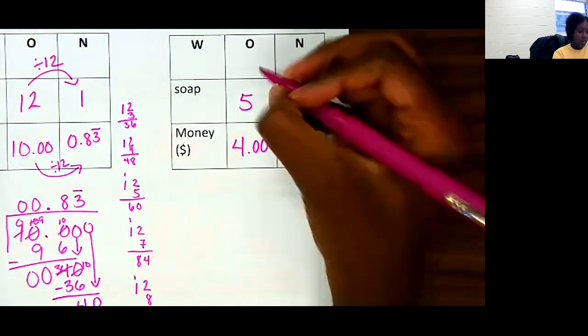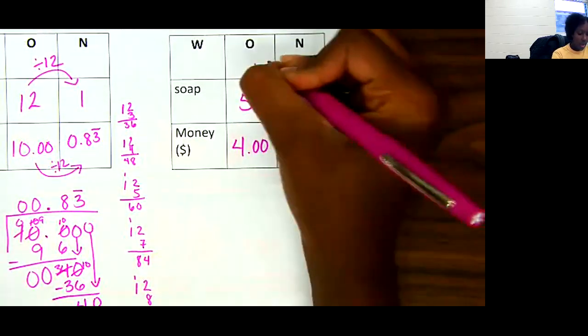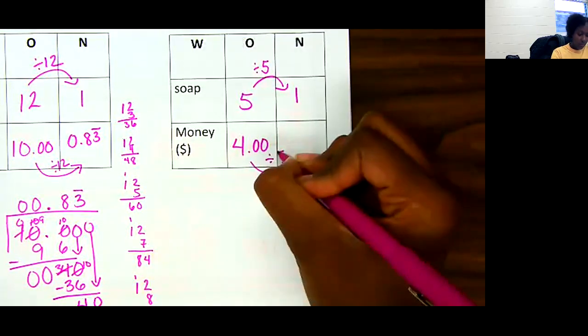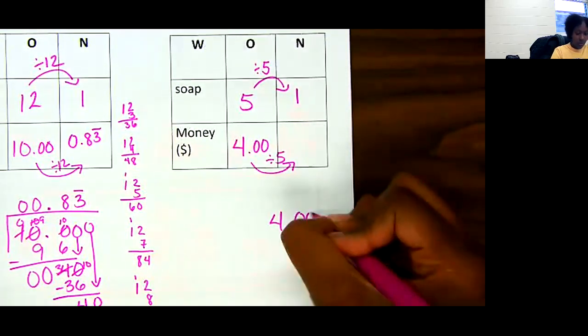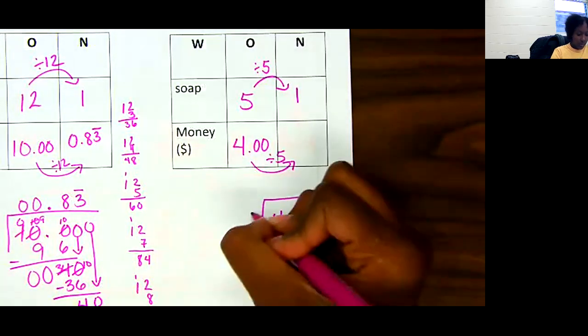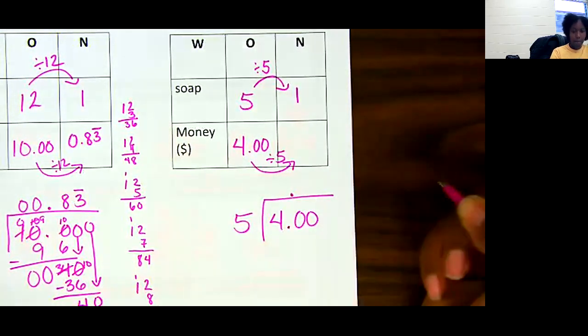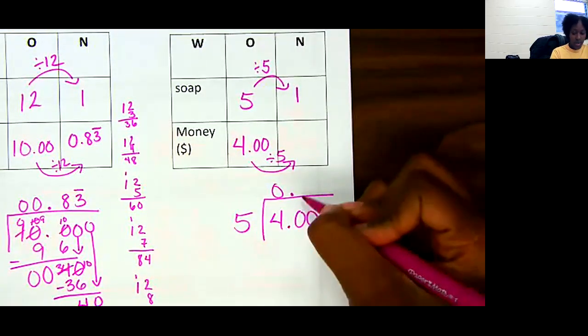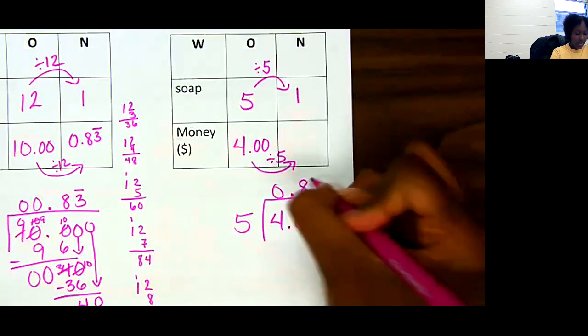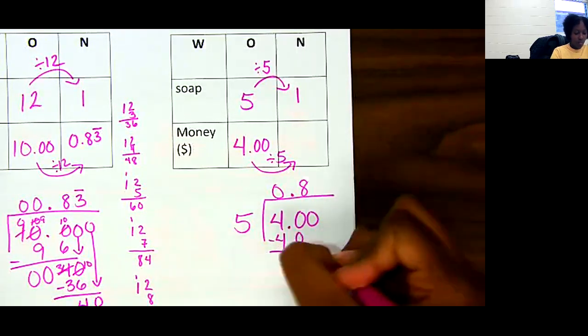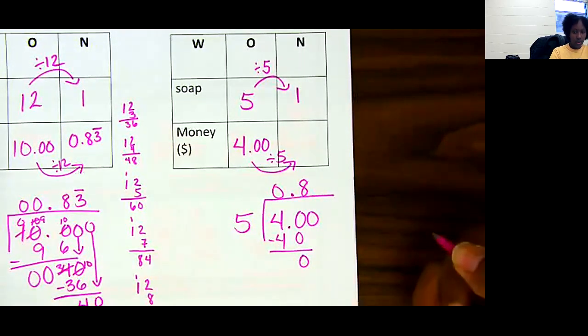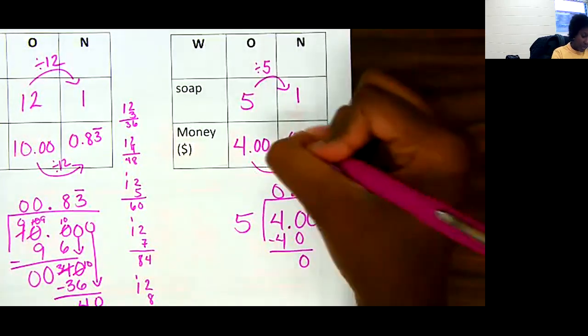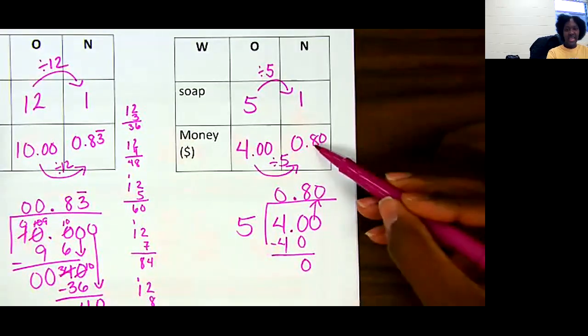Let's look over here. In order to get to one bar, I had to divide by 5, so I need to do the same thing here. So I have $4 divided by 5. Remember to bring your decimal up. 5 can't go into 4. 40. 5 times 8 is 40. I have zero left over. I still have a zero here, so I can just bring it up. So over here, one bar of soap is 80 cents.